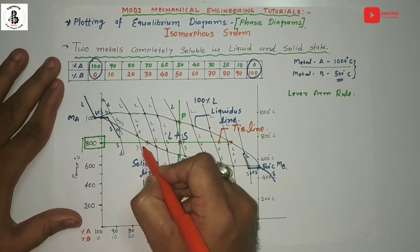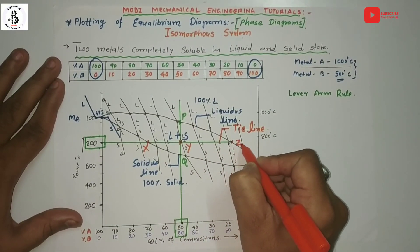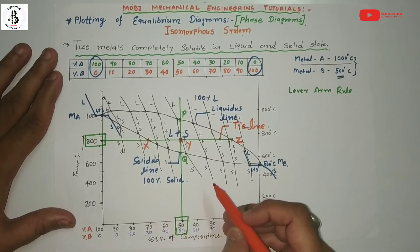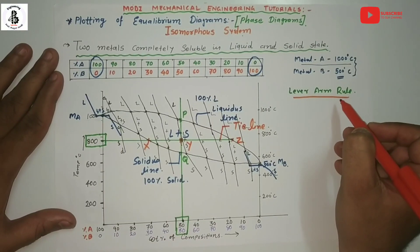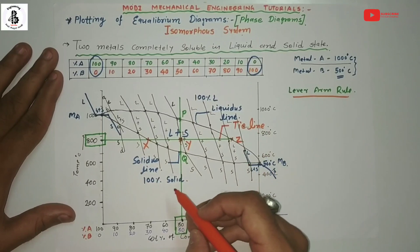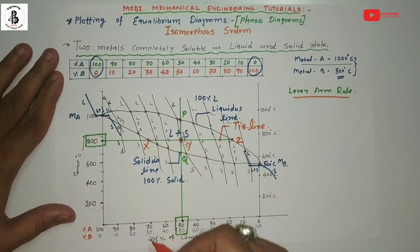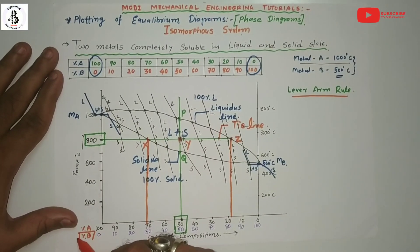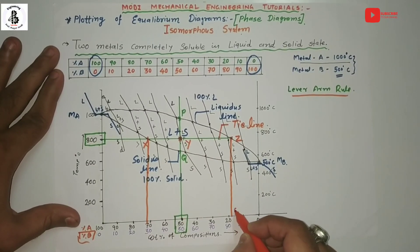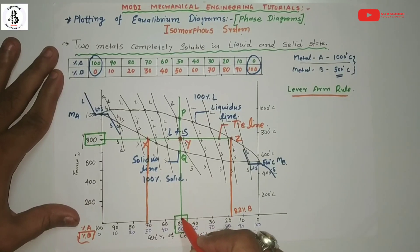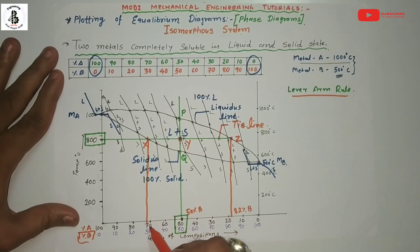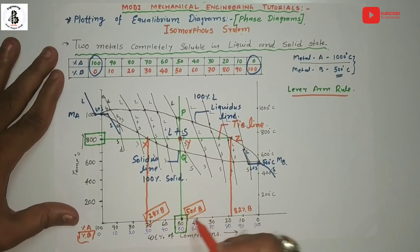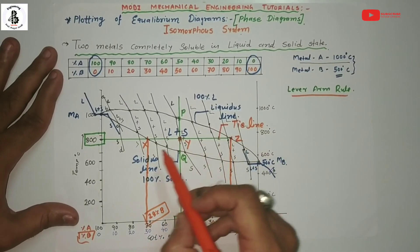From the projections of points X and Z to the composition axis, we read approximately 28% B at the solidus intersection (point X) and 82% B at the liquidus intersection (point Z), with 50% B at the composition line (point Y). To find the weight percentage of liquid, we take the distance XY divided by the total distance XZ, multiplied by 100. That gives us (50 minus 28) divided by (82 minus 28), multiplied by 100, which equals approximately 40.74% liquid.